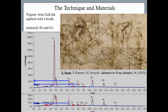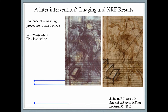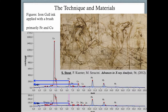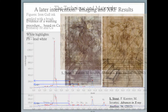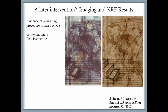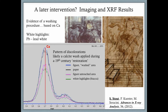The next study was the Adoration of the Magi drawing by Leonardo da Vinci, held at the Uffizi Gallery. First imaging was undertaken, then it was investigated what ink Leonardo used. It was primarily based on iron and copper, allowing it to be identified as iron gall ink. Areas appearing different in the imaging were analyzed with XRF, and according to the calcium peak, it was discovered that a calcite wash procedure was likely done in a 19th-century restoration. Lead white highlights were also discovered on the edge of each step.